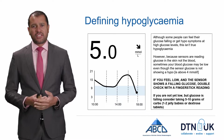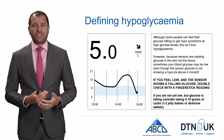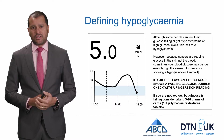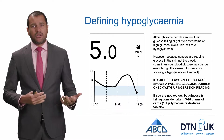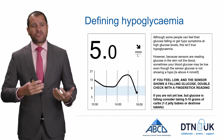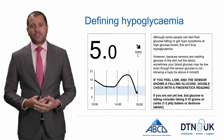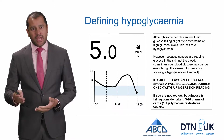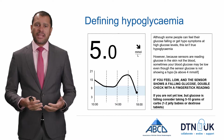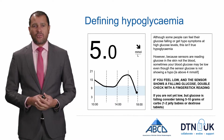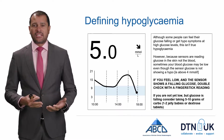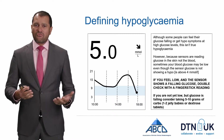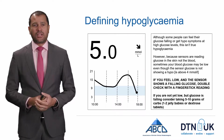The first thing is to define hypoglycemia and look at what definitions are used by clinicians and by patients. Here you can see a trace where the blood glucose has been high and is drifting down, showing a glucose reading of five millimoles per litre with a downward arrow. Although some people can feel the glucose falling and get symptoms at these higher glucose levels, this isn't really understood to be true hypoglycemia.